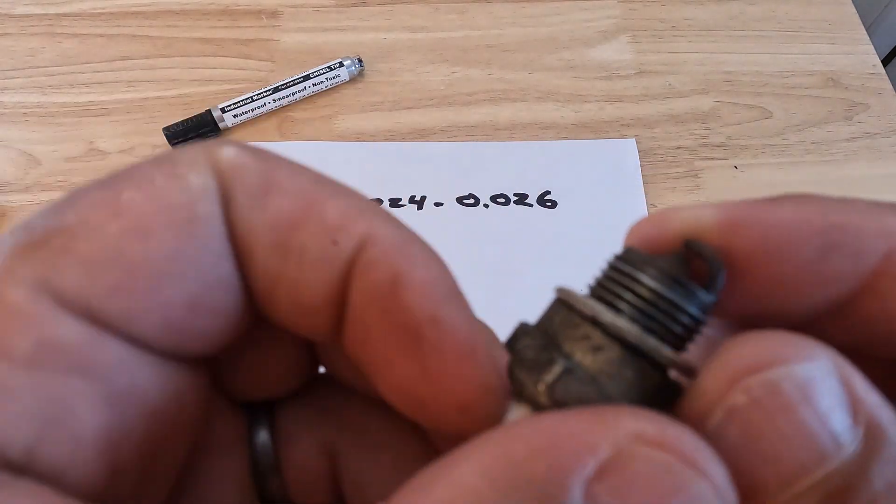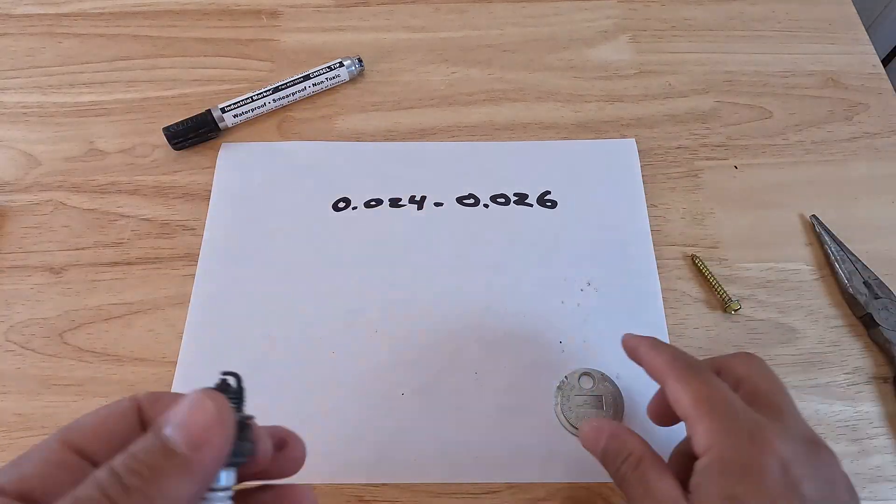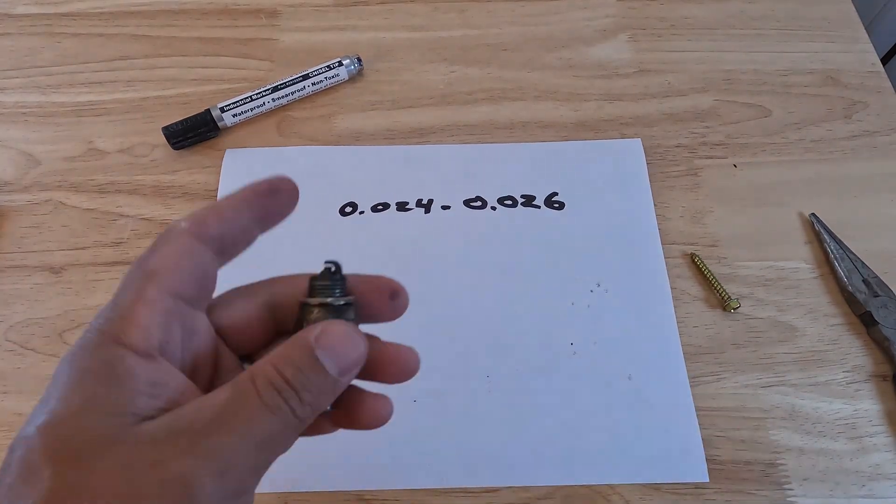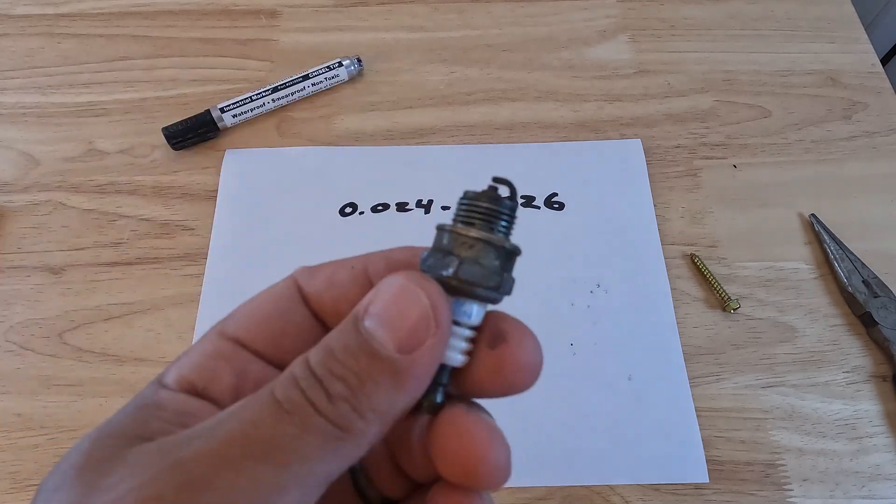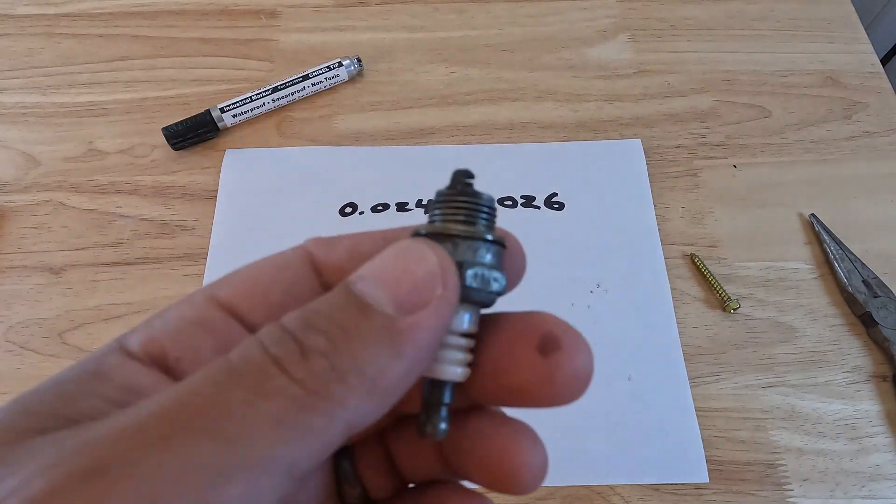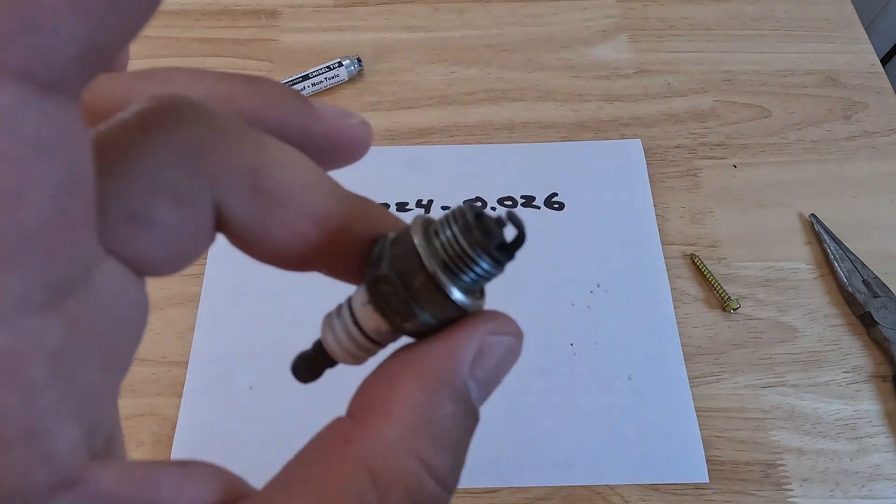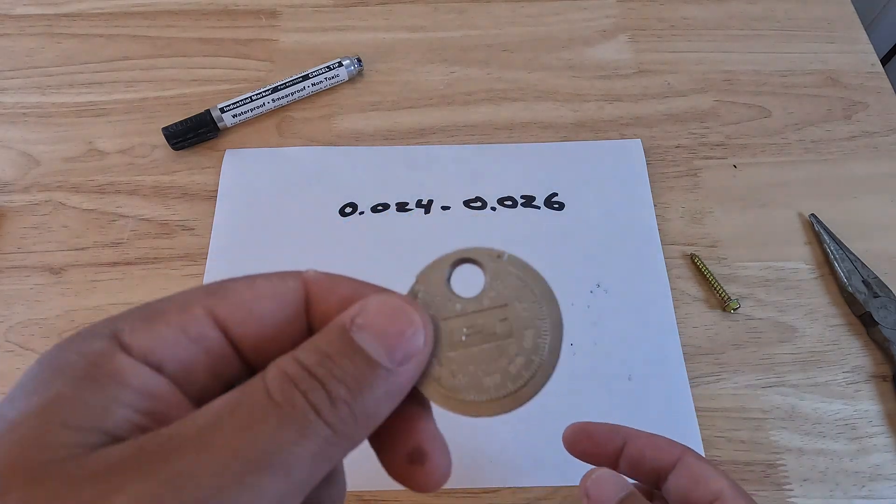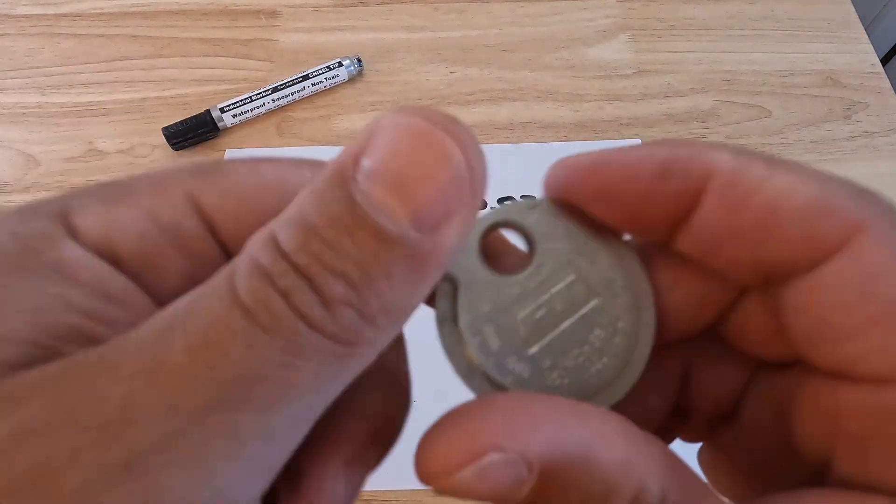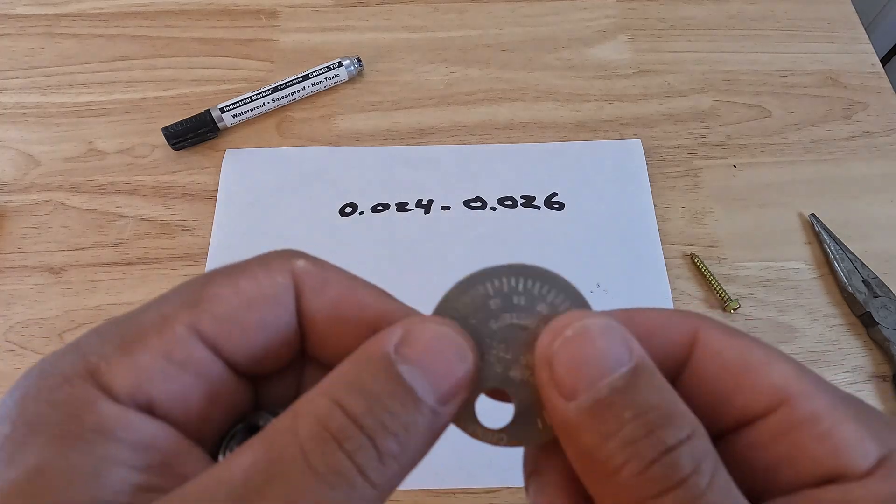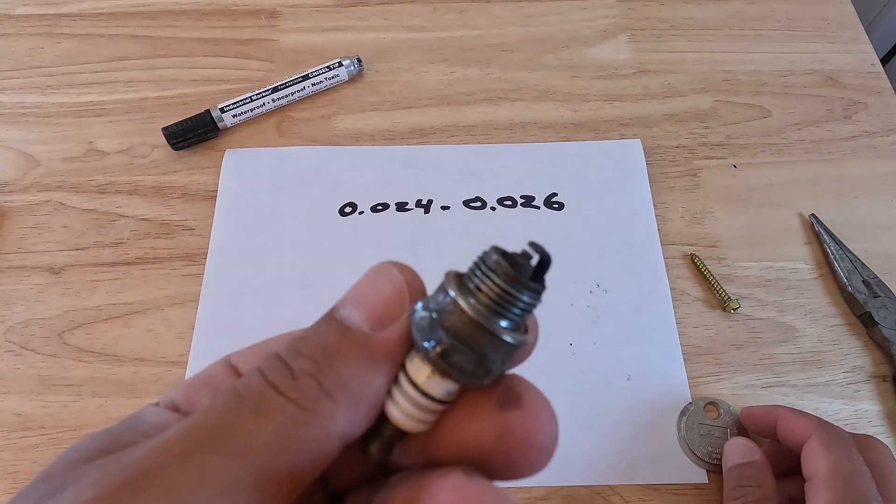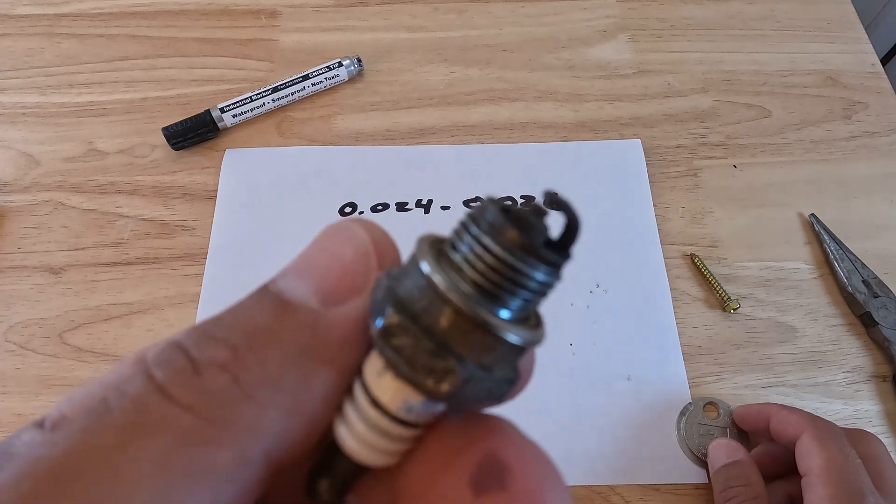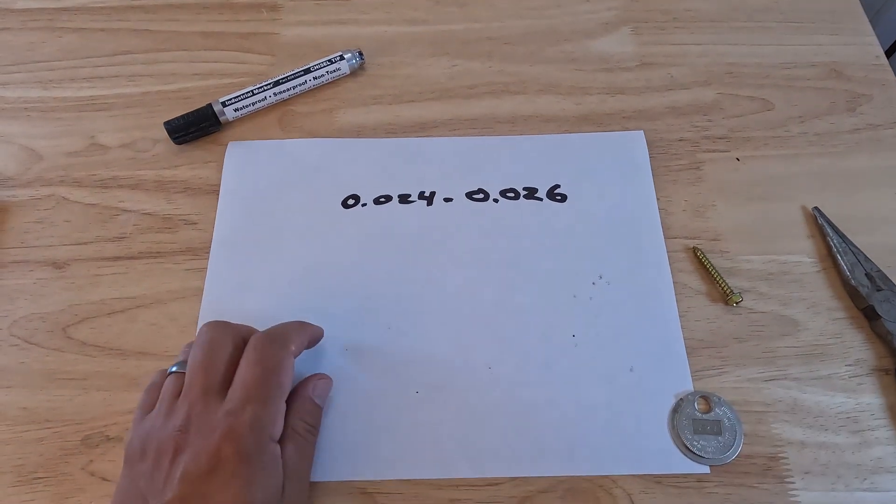That is how you gap a spark plug to the recommended manufacturer settings. If you guys have any questions at all, please reach out in the comments or if you're wondering what the correct gap size is for your leaf blower, for your lawnmower, for whatever, reach out in the comments and I will help you look up the correct spark plug gap size. And then also be sure to just check the link in the description where you can pick up this little gap tool. Yeah guys, that pretty much does it on this video. Let me know if you guys have any questions. Be sure to subscribe to the channel if this video helped you out. Yeah guys, that pretty much does it. Thanks for watching, we'll see you next time.